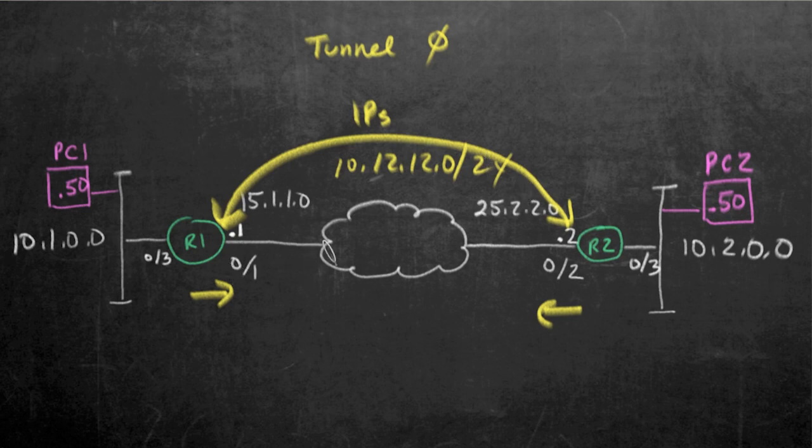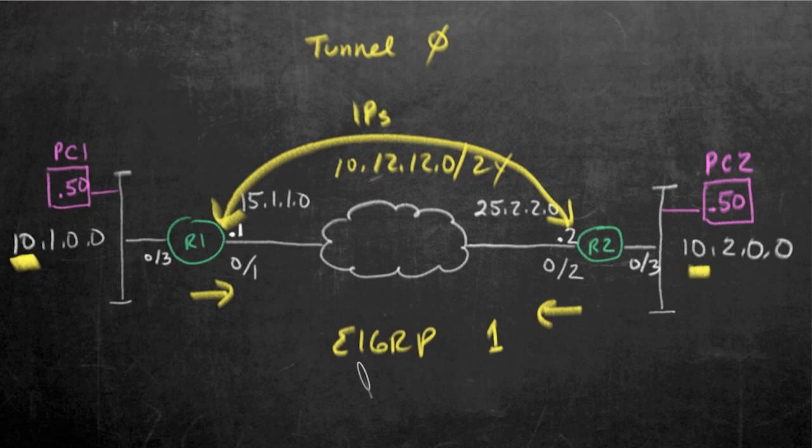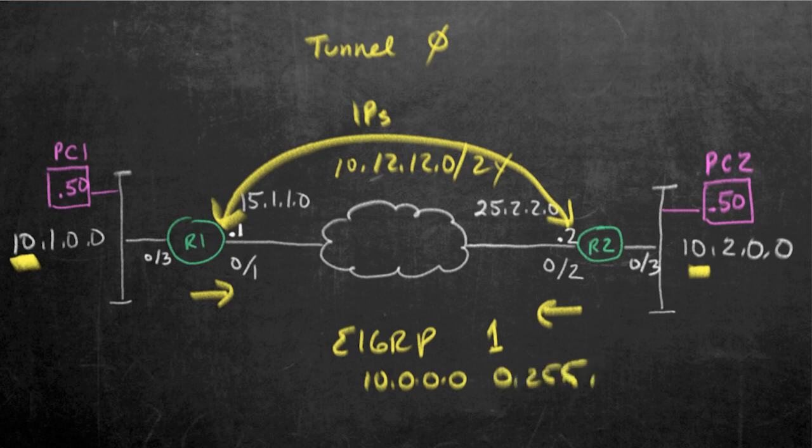To accomplish that, let's add EIGRP and use Autonomous System 1, and let's only include the 10 networks. In our network statement, we'll say 10.0.0.0 with a wildcard mask saying we only care about matching on the first octet of 10.